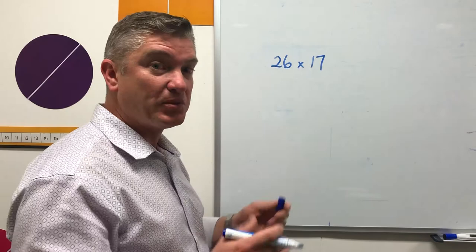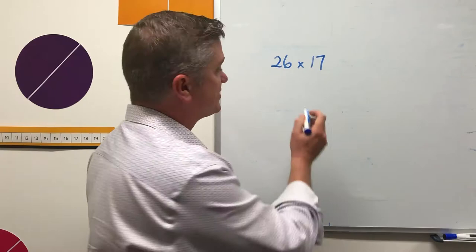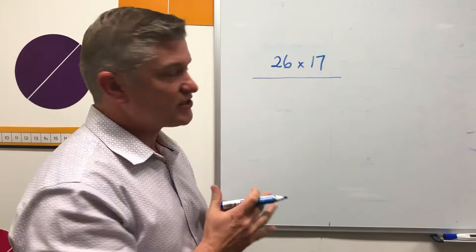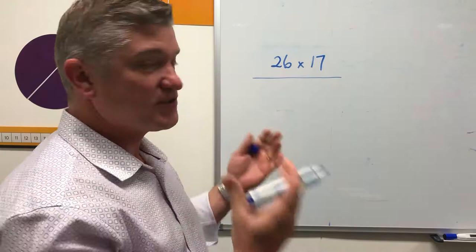So suppose you want to multiply 26 by 17. I deliberately chose messy numbers which have no really nice strategy immediately obvious, at least to me, and I wouldn't be doubling and halving those particular numbers because I don't think the end result is going to make it any easier.